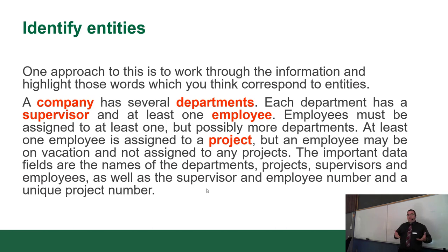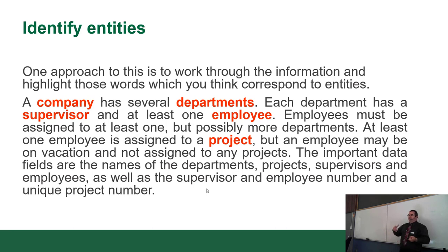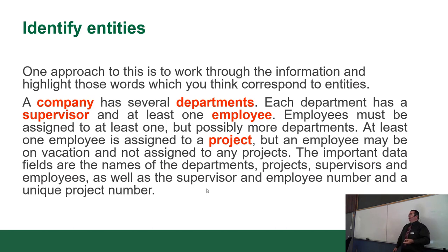The first process step is to work through the information and highlight words that correspond to entities — find the nouns or objects. You only identify them once, even if they appear multiple times. In the example: a company has several departments, each department has a supervisor and at least one employee. The rest of the text elaborates further but introduces no new objects.